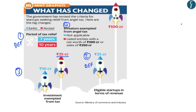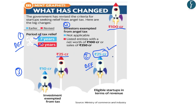The center has notified new rules regarding the angel tax. First, the definition of a startup has been changed: previously, an entity was considered a startup if registered before 7 years; now this has been extended to 10 years for tax relief. Second, an entity will continue to be recognized as a startup if its turnover for any financial year has not exceeded ₹100 crore under the new rules — previously this limit was ₹25 crore. This expands the definition and provides relaxation in the startup definition for tax relief from angel tax.